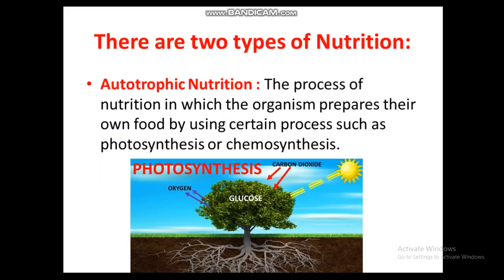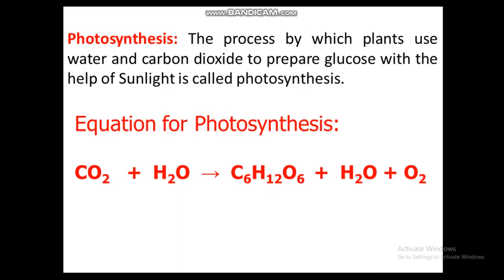Now, what is photosynthesis? In lower classes like class 6 and 7 we defined it simply as 'the process by which plants prepare their own food.' That definition is fine, but we need to upgrade it for class 10: the process by which plants use water and carbon dioxide to prepare glucose with the help of sunlight is called photosynthesis.